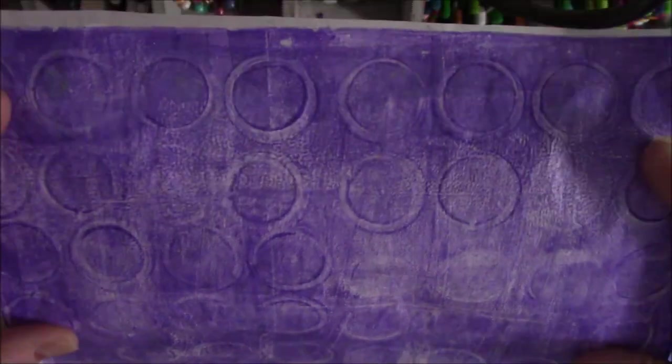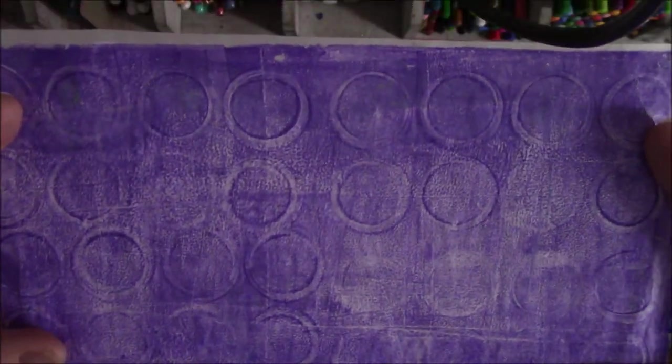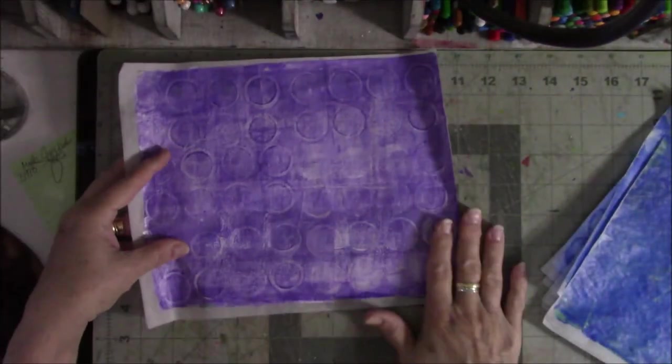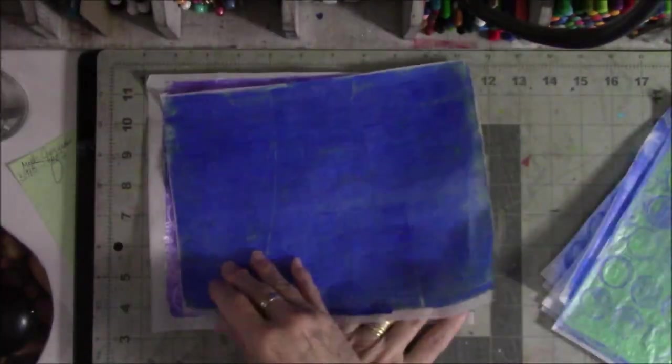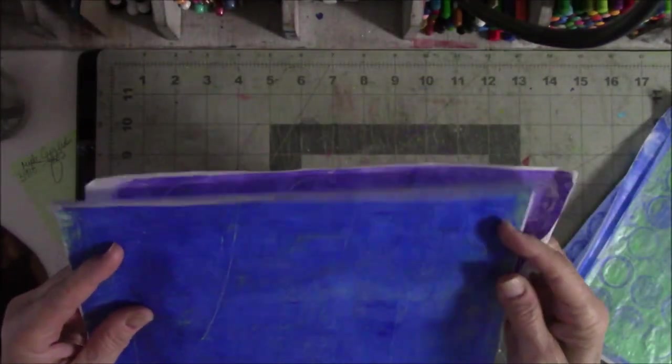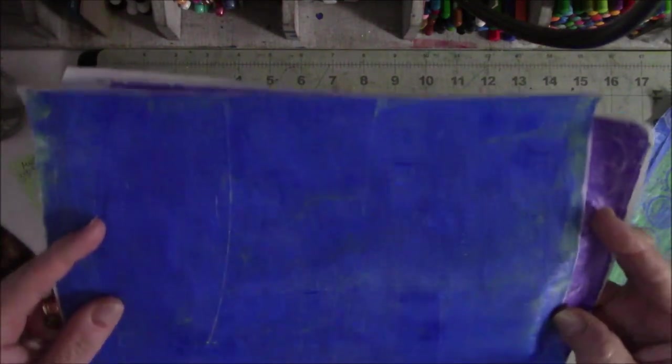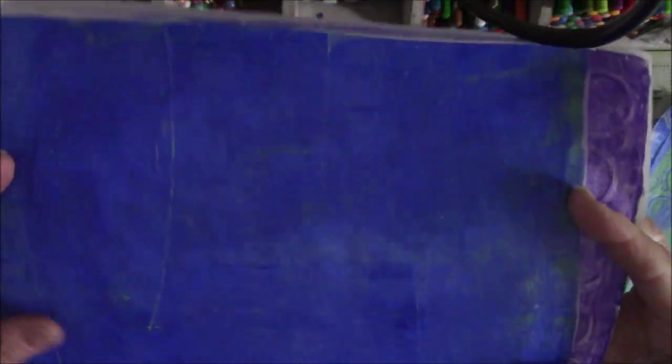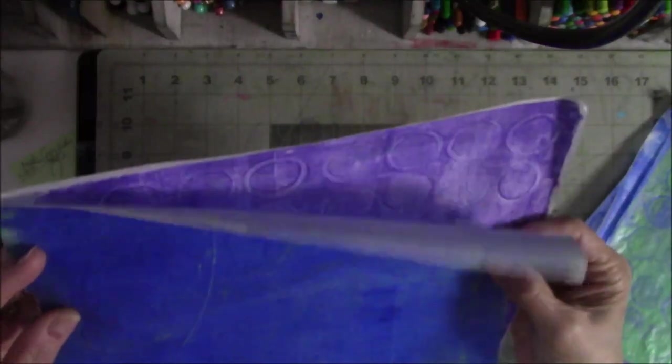All right. So here's the milk lid stampy dues. This one did not work very well. It just turned out to be blue and you can faintly see some of the milk, the round things. Oh, I can see them. I don't think anybody else would be able to.